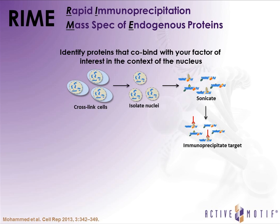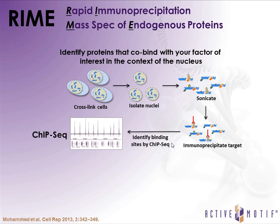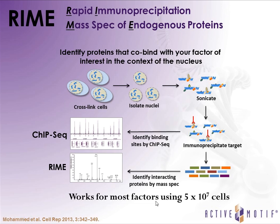For this, we've been collaborating with the lab of Jason Carroll to incorporate RIME — Rapid Immunoprecipitation Mass spectrometry of Endogenous proteins. You start just as you would for a normal ChIP by cross-linking cells and isolating nuclei, then sonicate the DNA and end up with your immunoprecipitated target. In a typical ChIP-seq experiment you would isolate the DNA and sequence it, but in RIME you instead isolate the proteins that are in complex and analyze them by mass spec. This works for most factors using as little as 5 × 10^7 cells.